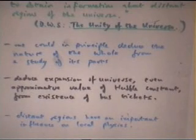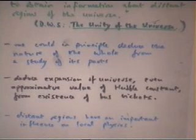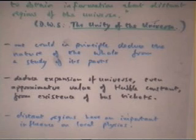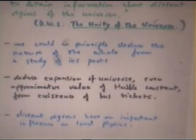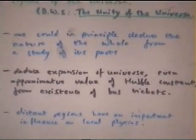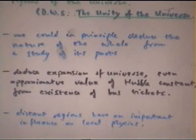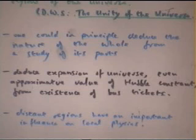What that means is one could, in principle, deduce the nature of the whole from a study of its parts, because everything is interconnected. If you look closely enough at any local part, it should tell you about the distant parts. So we used, in the old days, to talk about this in a kind of half-joking but actually quite serious way. One should be able to deduce the expansion of the universe and even the approximate value of the Hubble constant from the existence of bus tickets.